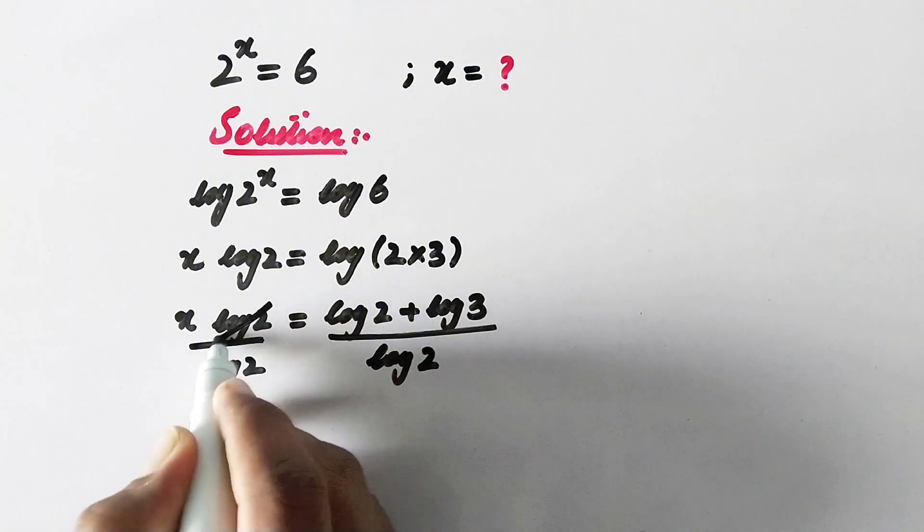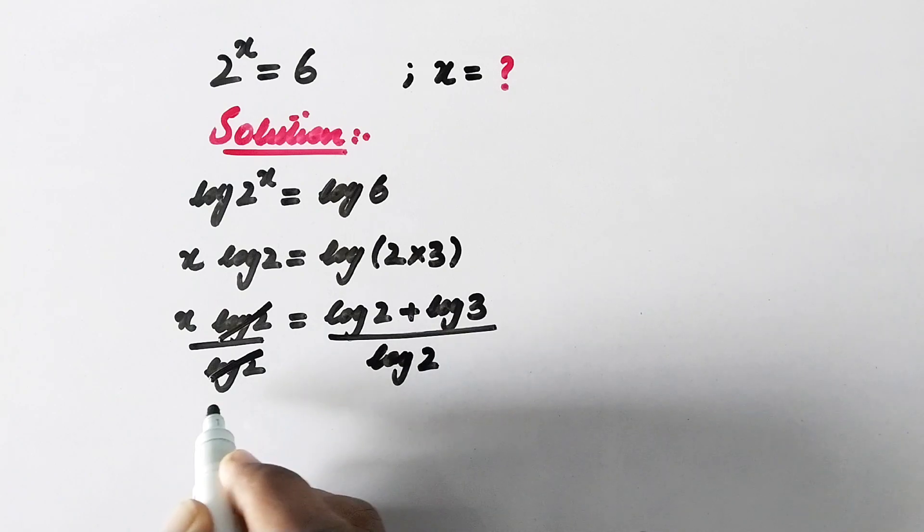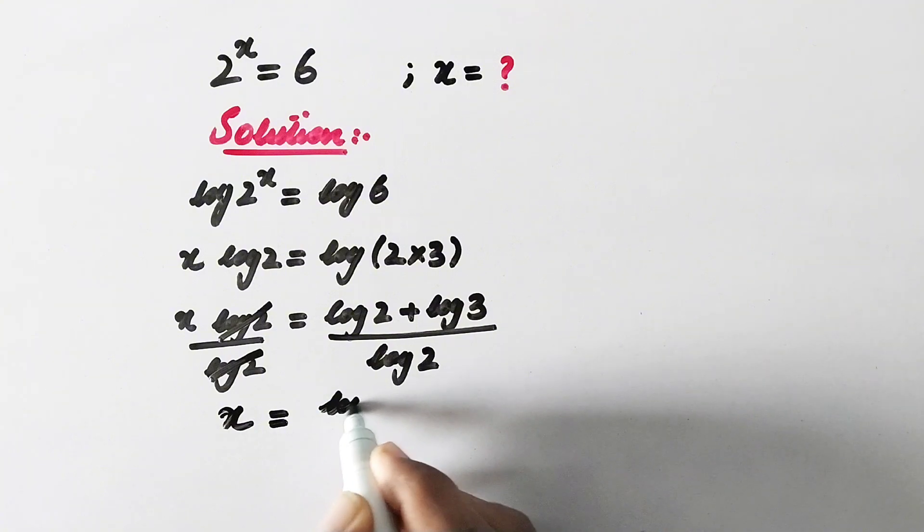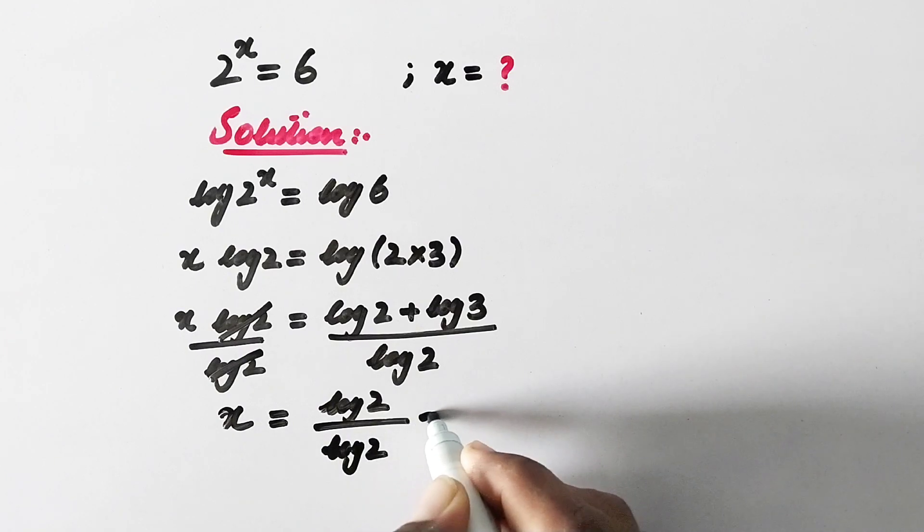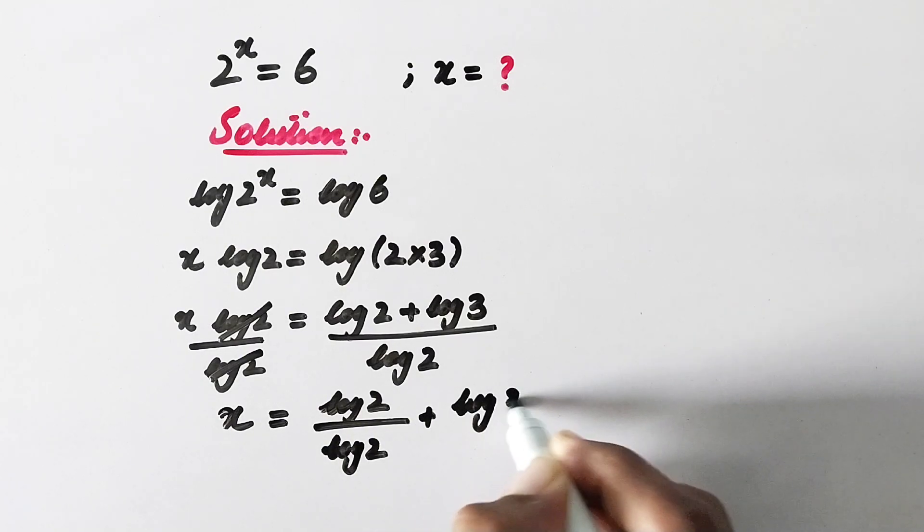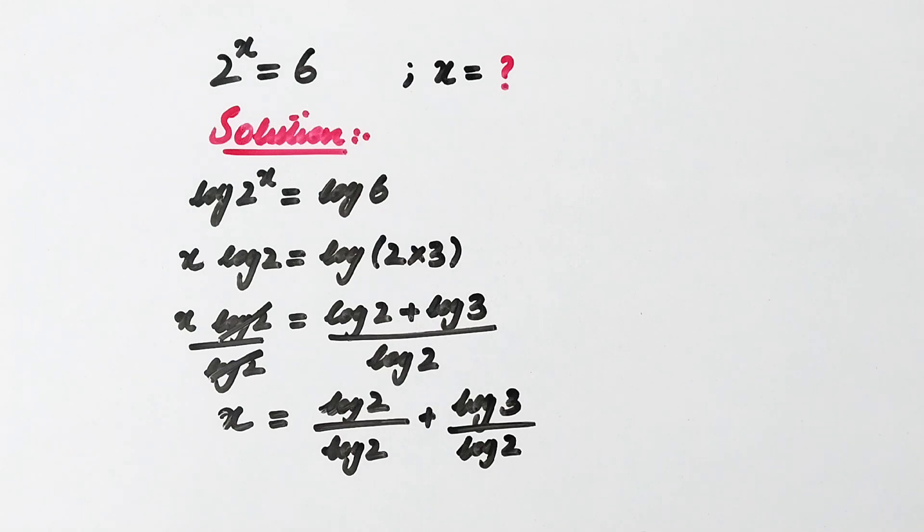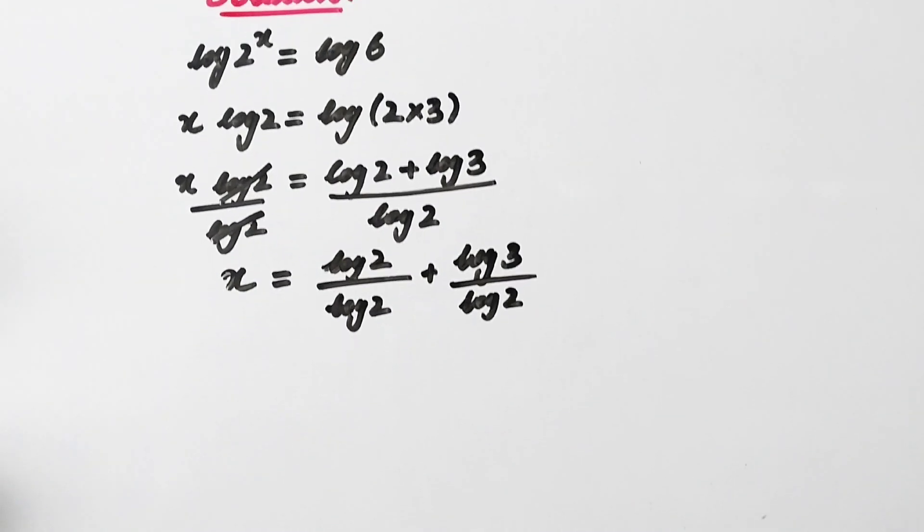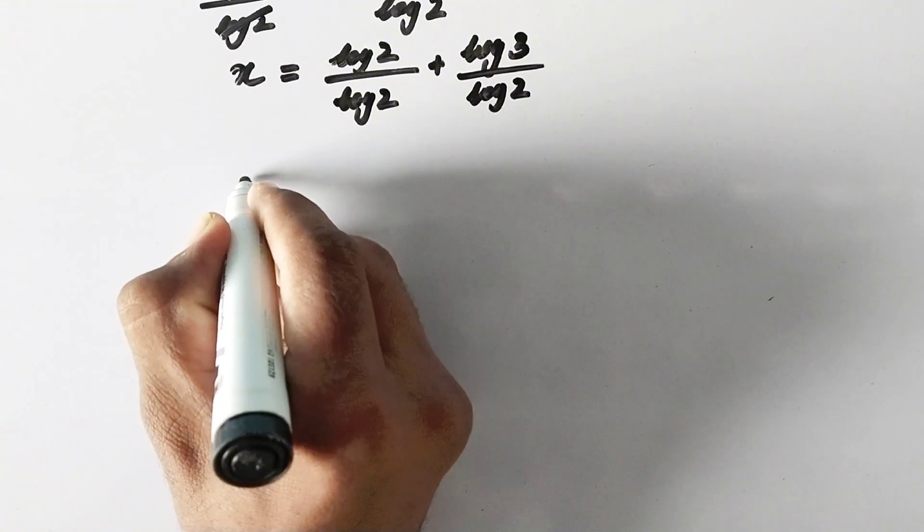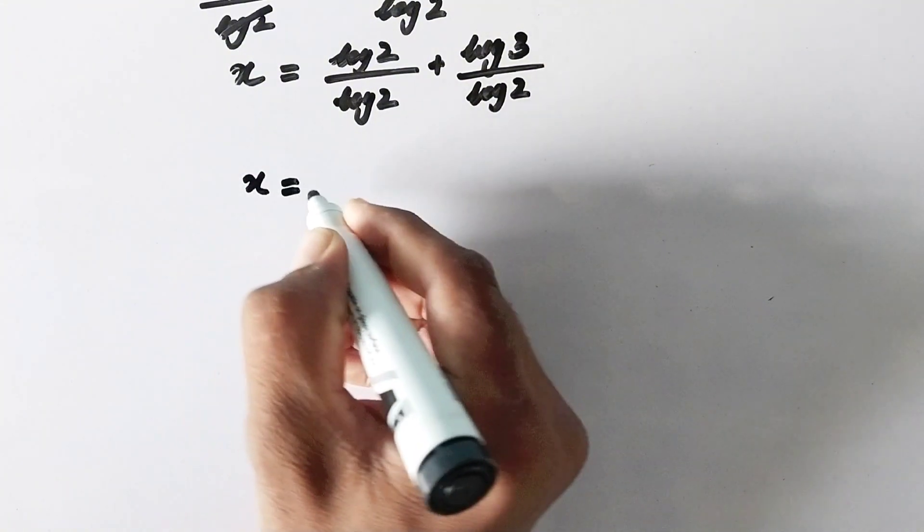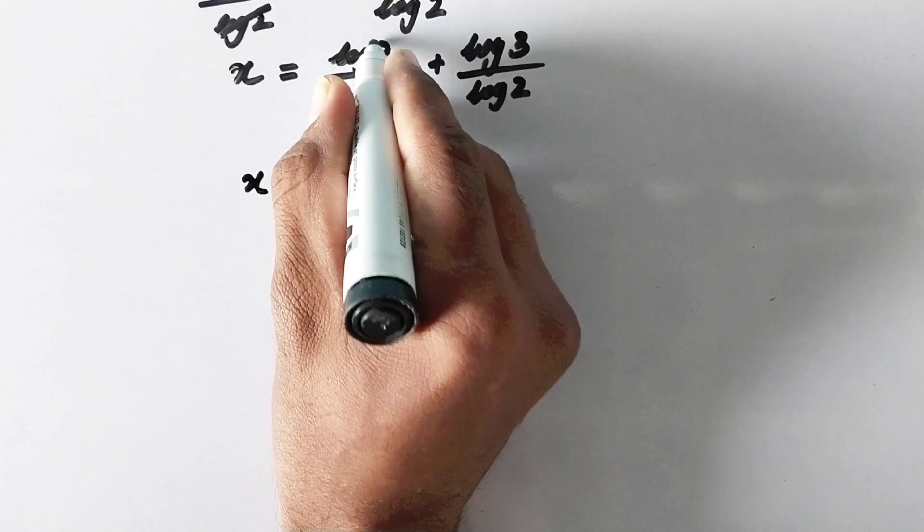So now this log of 2 will cancel out this log of 2, and x will be equal to log of 2 over log of 2 plus log of 3 over log of 2. Now x will be equal to, as this value and this value are the same, so